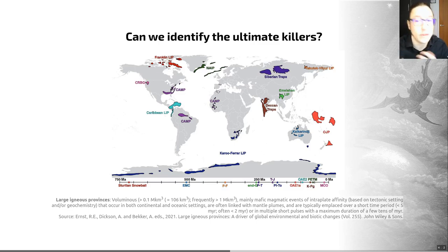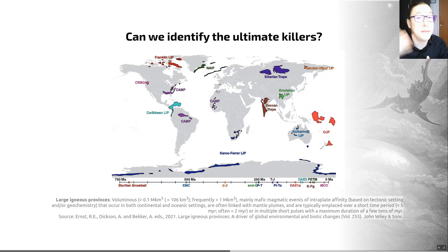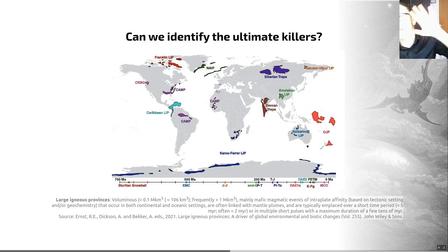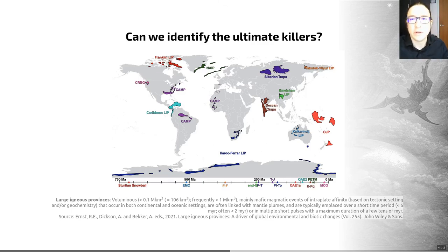It could be — and we think now — that this is down to continental configuration, perhaps, because the best examples of large igneous province and extinction relationships occurred with one mass continent: Pangaea. So it may be that large igneous provinces are particularly important when you have a single continent. That is one potential ultimate killer.